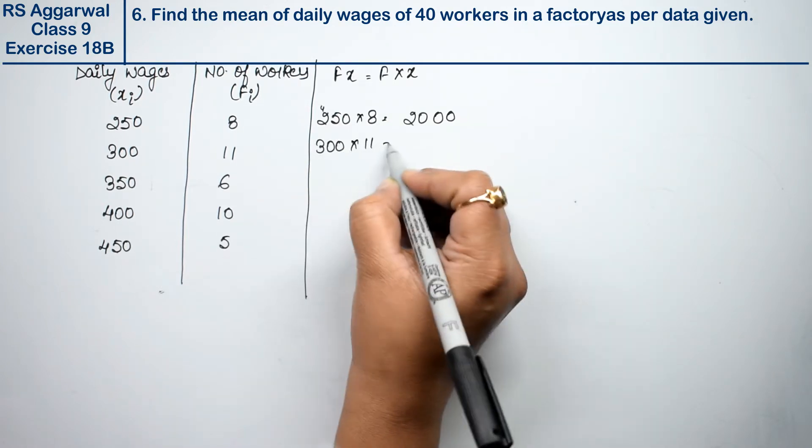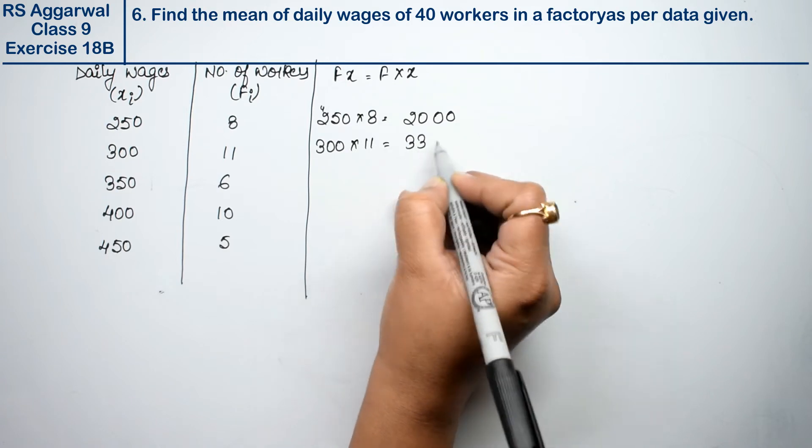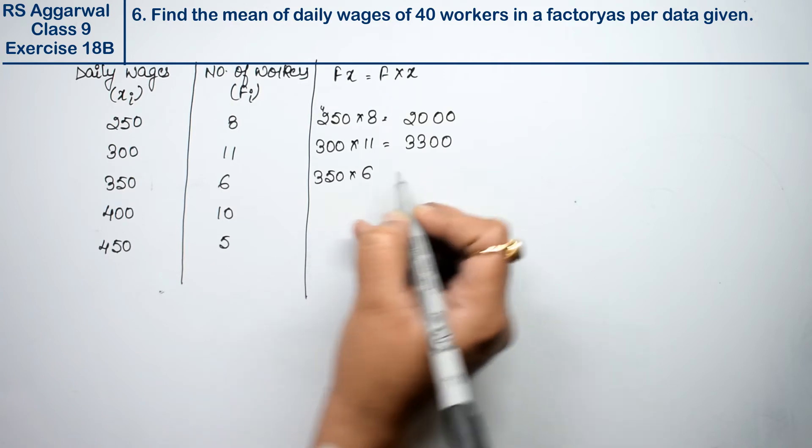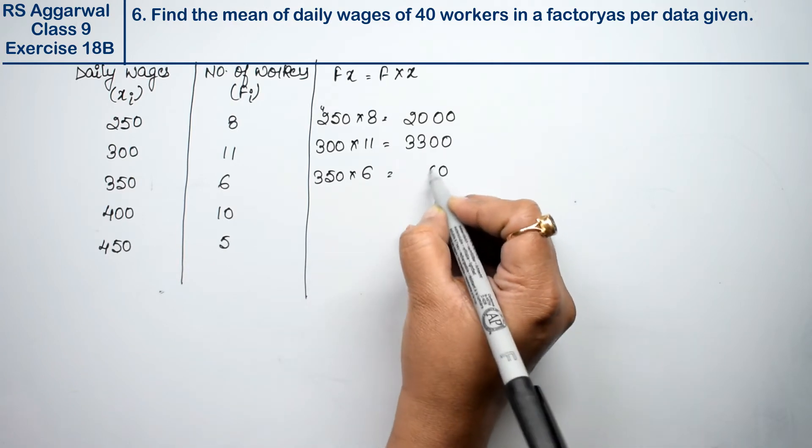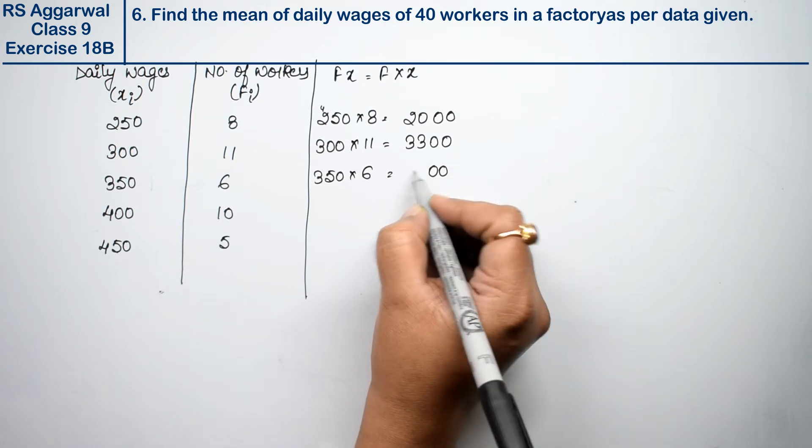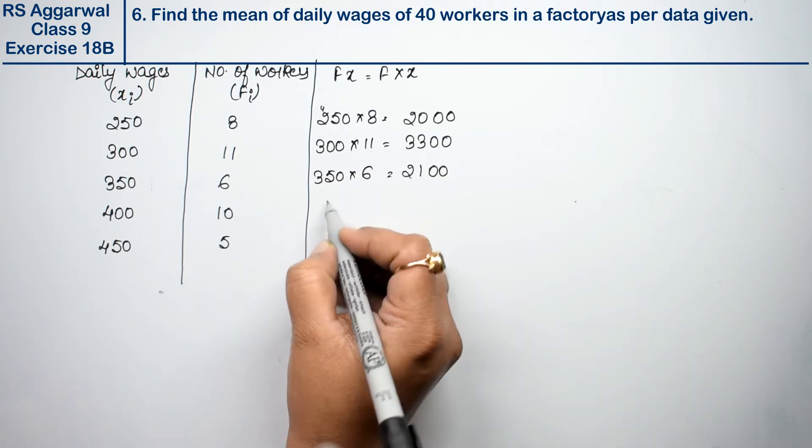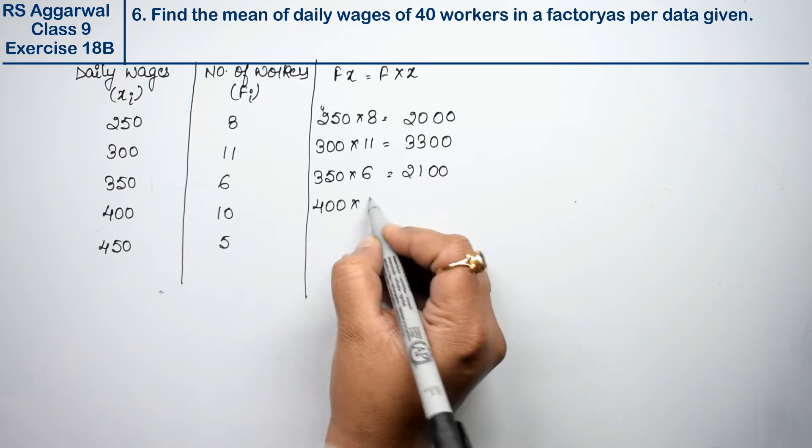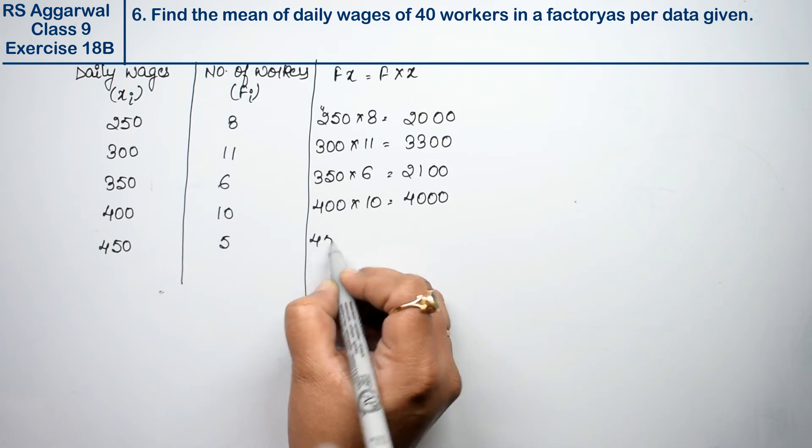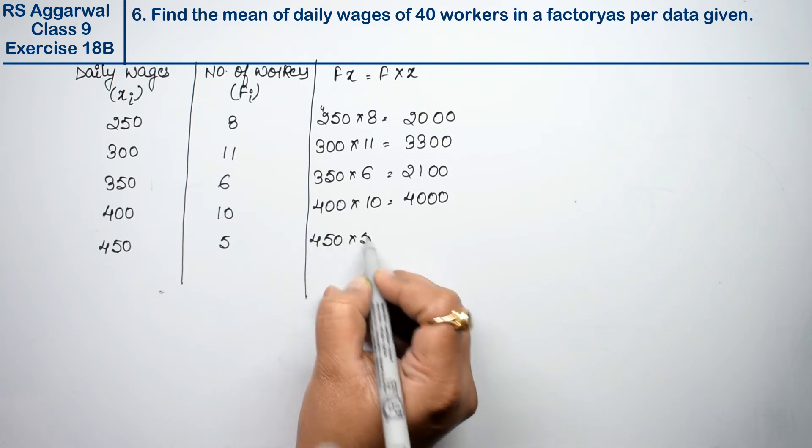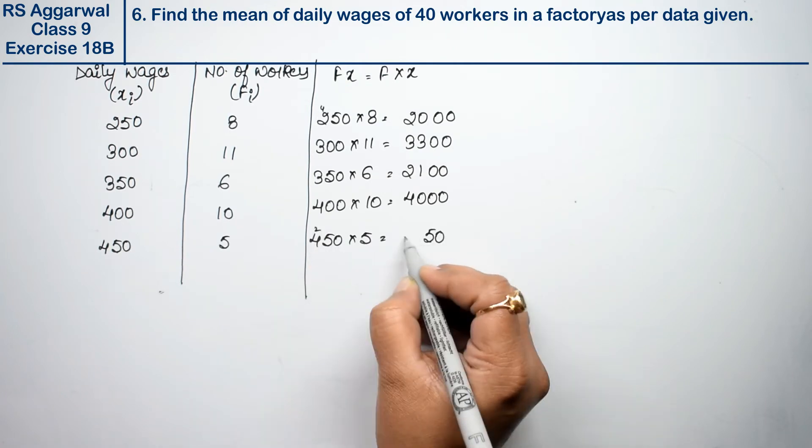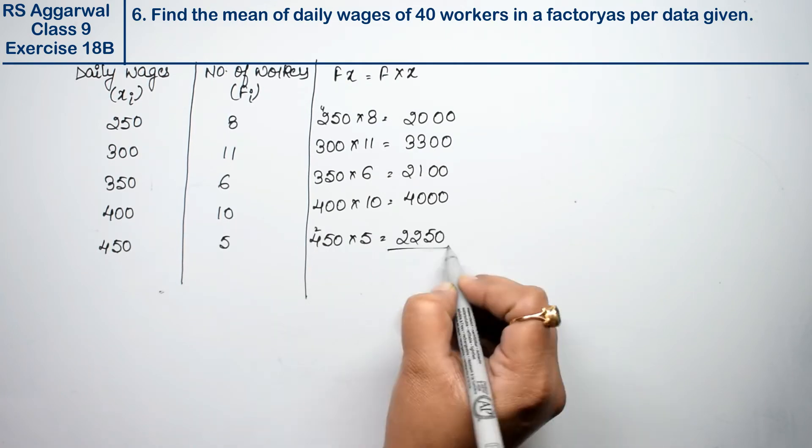300 times 11, that is 3300. 350 times 6, that is 0, 6 times 5 is 30, 18, 6 times 3 is 18, 19, 20, 21. Now 400 times 10 is 4000. 450 times 5, that is 500, 550, 25, 5 times 4 is 20, 22, right?